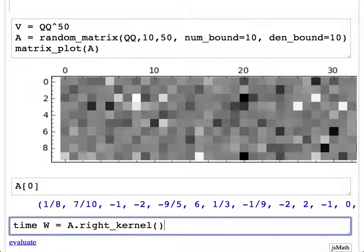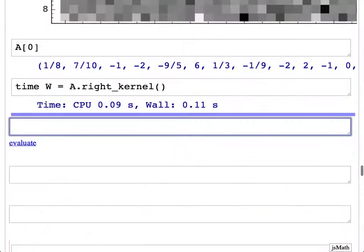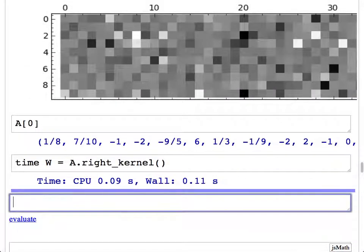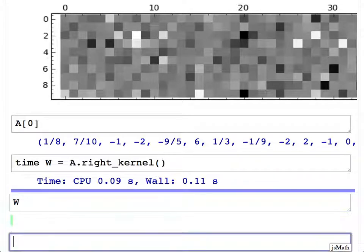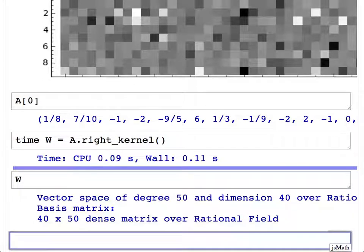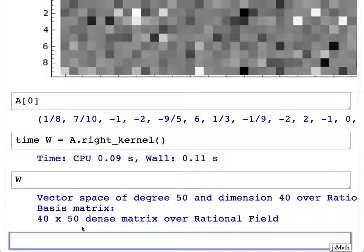W equals A.right_kernel(). This matrix has 10 rows and 50 columns. The right kernel is a whole bunch of vectors with 50 entries that when you dot them with this matrix, you get zero. There we are. In 0.09 seconds, I computed that. Now we have this big vector space. It says vector space of degree 50. The degree is the dimension of the ambient space in which it's sitting, and dimension 40. This kernel is a 40-dimensional subspace of a 50-dimensional vector space.